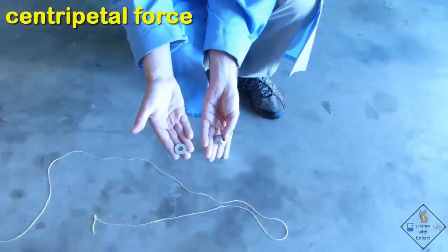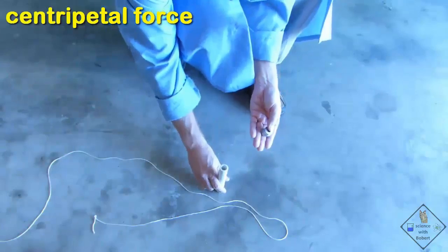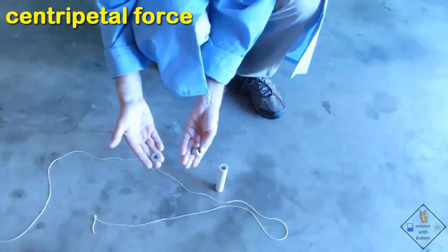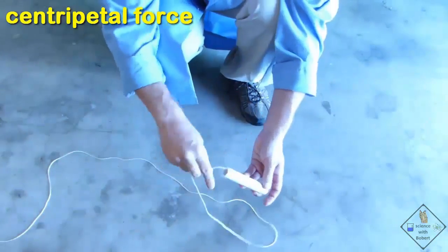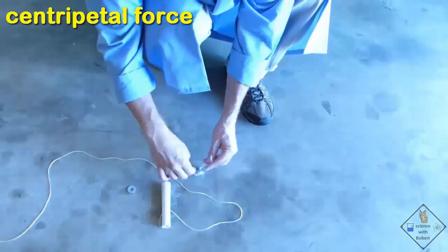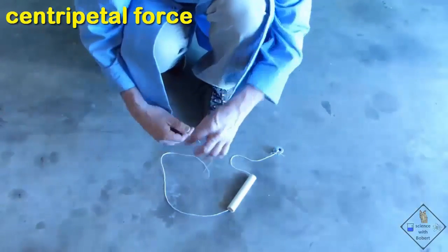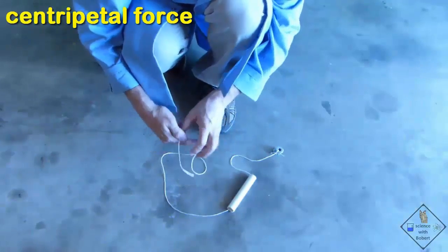Dr. Smith has one washer in one hand and 10 washers in the other. He is first going to put a string through a short PVC tube that has a very smooth top. He then ties 10 washers to one end of a roughly 6 foot length of string and ties the other end of the string to a single washer.